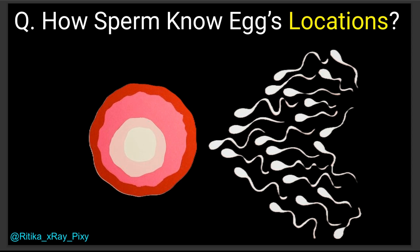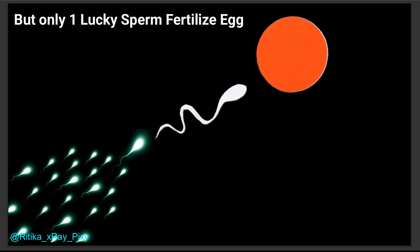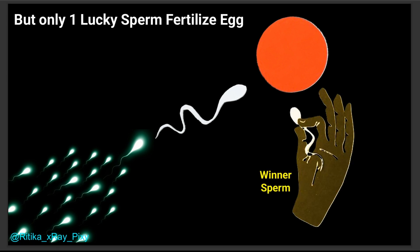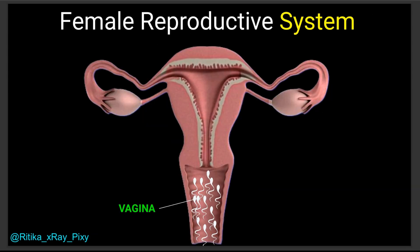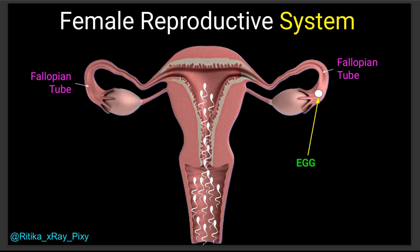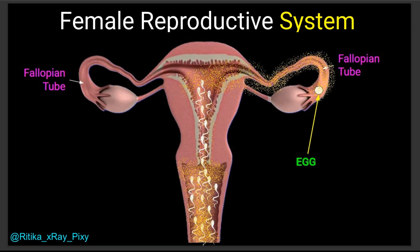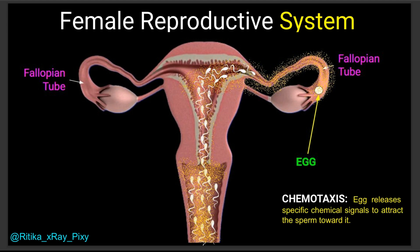When the egg is fertilized, it creates new life. The question is: how do sperm know the egg's location? Millions of sperms are released, and from the vagina they swim through the cervix and into the uterus. Sperm don't know where the egg is, but the body uses chemicals to guide them. The egg releases specific chemicals to attract sperm to the correct location — this is called chemotaxis.